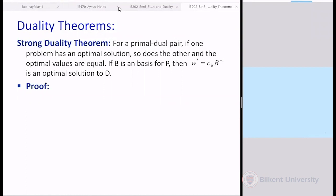Now, this brings us to the strong duality theorem. What does the strong duality theorem say? Take a primal-dual pair. It says: if one of the problems has an optimal solution, so does the other one.